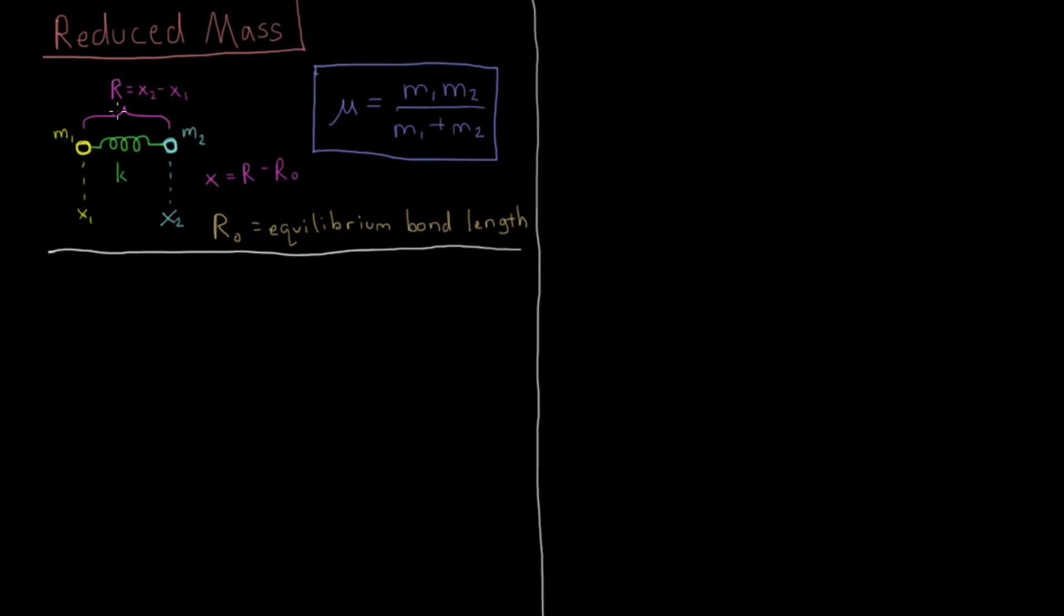And we're going to have this coordinate r be the distance between the two atoms, x2 minus x1. And the coordinate that we're going to look at for the potential energy is this position coordinate x, which is the displacement of this bond away from some equilibrium bond length r0. So things like H2 have an equilibrium bond length of 0.74 angstroms. So 0.75 and 0.73 are both 0.01 angstroms displaced away from that, so those would both have x values of 0.01 in magnitude.